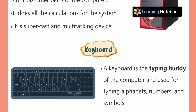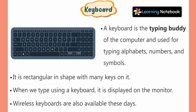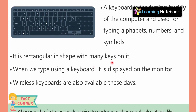Now let's learn about the third part of the computer: the keyboard. A keyboard is the typing body of the computer and it is used for typing alphabets, numbers, and symbols. Just as we call the CPU the brain, we call the keyboard the typing body. We can type alphabets, because we see alphabets here, along with numbers and different symbols. Whatever we want to type into our computer, we can do it with the keyboard. It is rectangular in shape with many keys on it.